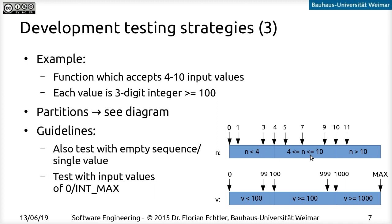Here we have both partition-based testing — picking input values either inside each partition or at the boundaries — and guideline-based testing, which tells us it's often a good idea to also put in zero and one. Even if this is completely outside the acceptable range, putting in zero for specific values might actually trigger different errors than, for example, putting in 99, even though they are technically in the same partition.